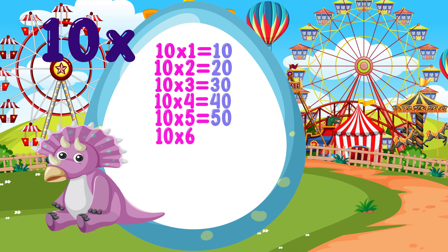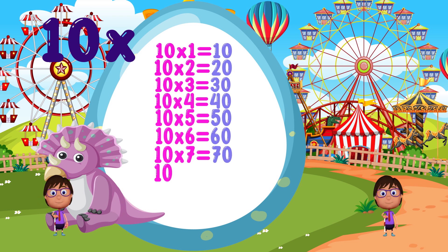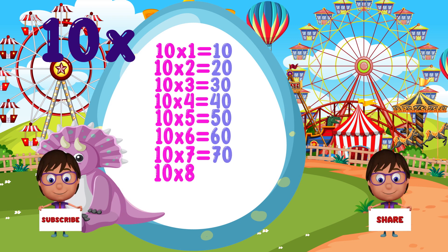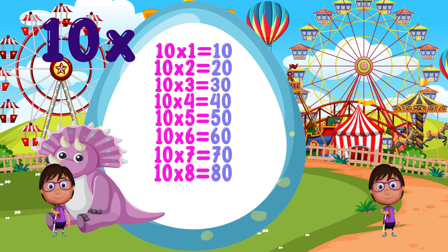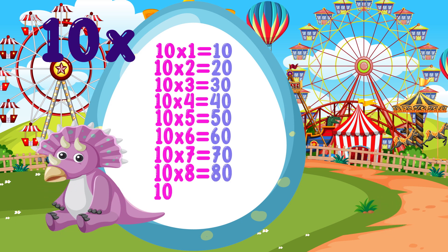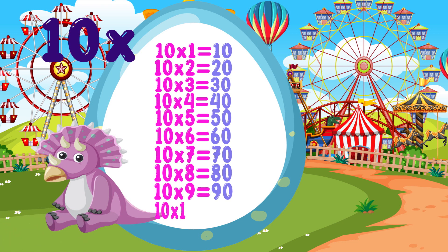10 times 6 is equal to 60. 10 times 7 is equal to 70. 10 times 8 is equal to 80. 10 times 9 is equal to 90. 10 times 10 is equal to 100.